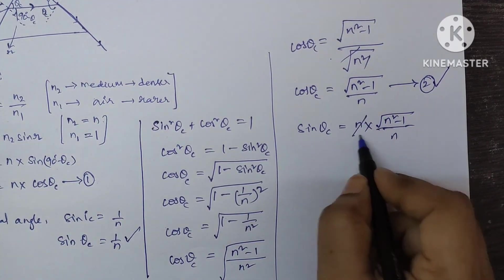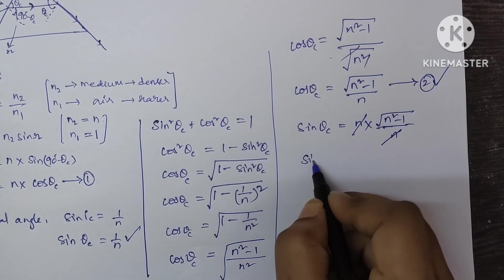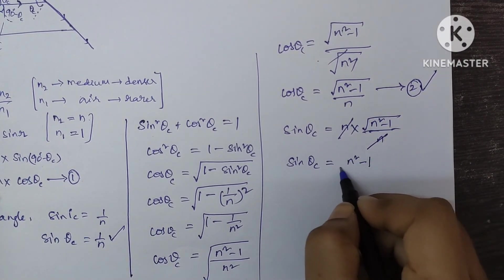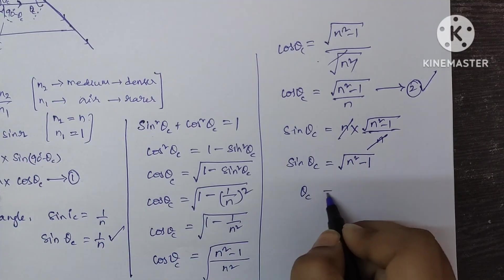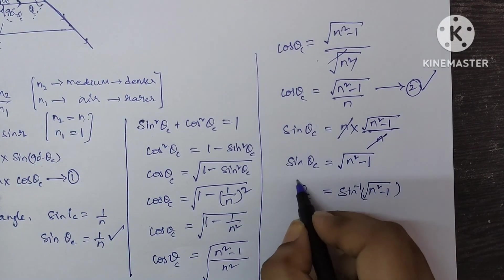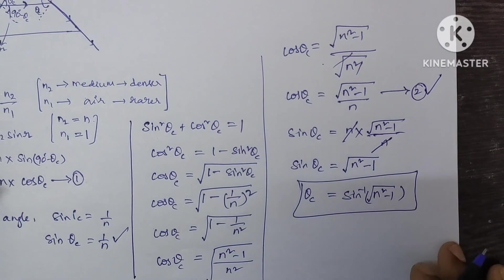Here N and N will get cancelled. Sin theta c equal to N square minus 1. Theta c is equal to sin inverse of N square minus 1 under root. This is the value of theta.